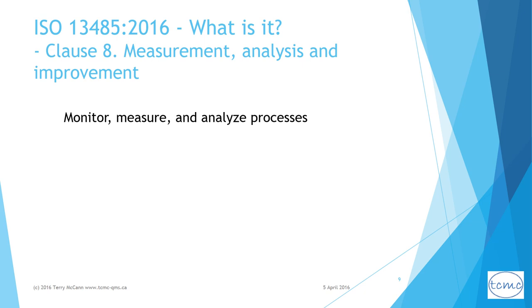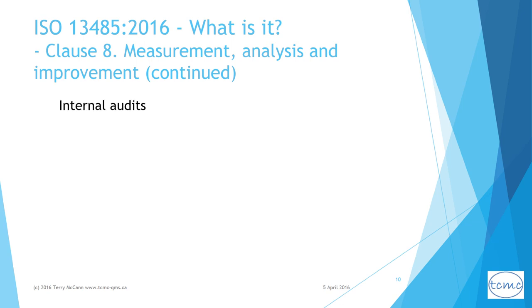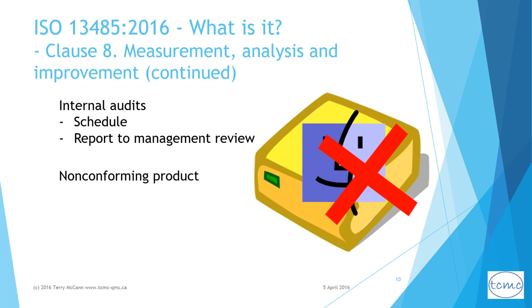Clause 8 covers measurement, analysis, and improvement. Firstly, you have to plan how your organization will monitor, measure, and analyze processes to ensure product and QMS conformity and QMS effectiveness. You also have to establish methods to obtain and monitor customer feedback, and processes to investigate complaints, review risk, take action, and report results including to regulatory authorities where appropriate. The organization has to plan and conduct internal audits to determine whether the QMS is in conformity and processes are achieving planned results. You have to monitor and measure product during manufacturing to identify non-conforming product and take appropriate action to isolate such products and prevent unintended delivery or use.